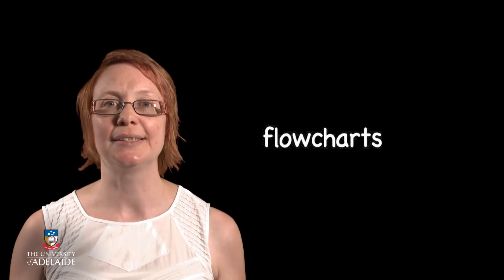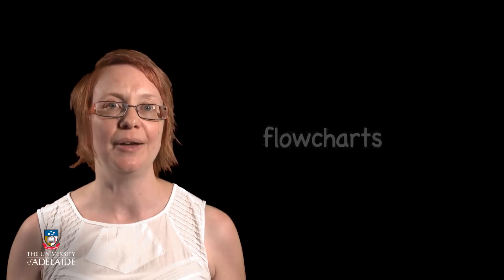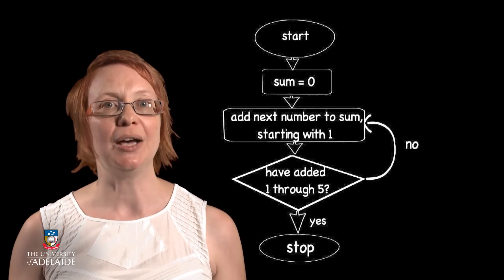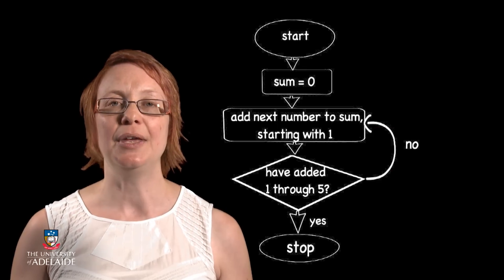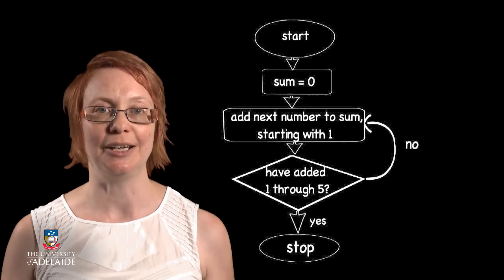Let's imagine that we wanted to calculate the sum of the numbers from 1 through to 5. This flowchart describes this process, where we start with our first number, and then add the next number in our sequence until we have calculated our sum.